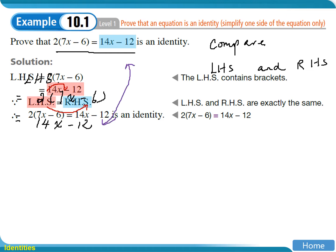Compare these two. In this case, you will find that 14x minus 12 is exactly the right-hand side. Then you can write it down like that and write your conclusion.